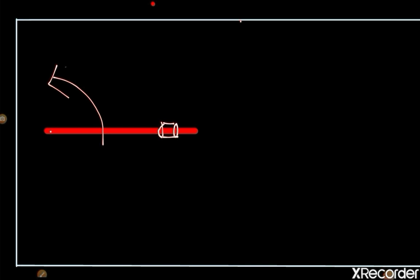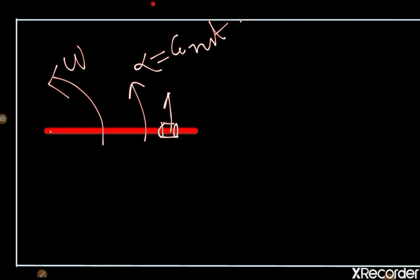The rod is moving with angular velocity omega and a constant angular acceleration alpha. Drawing the free body diagram of the bead: as the rod rotates, it pushes the bead, so the rod applies a normal reaction on the bead. Since the bead tends to remain behind, there is a tendency of sliding, so friction force acts. This friction force is required to provide the necessary radial acceleration, since the bead moves in a circular path and the normal force cannot provide centripetal force in that direction.